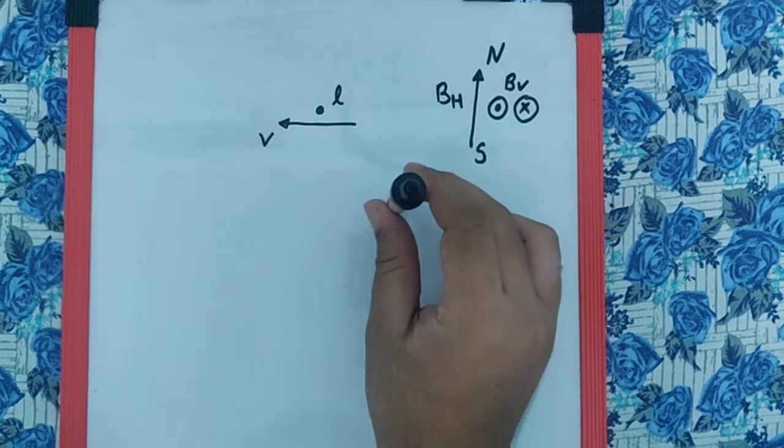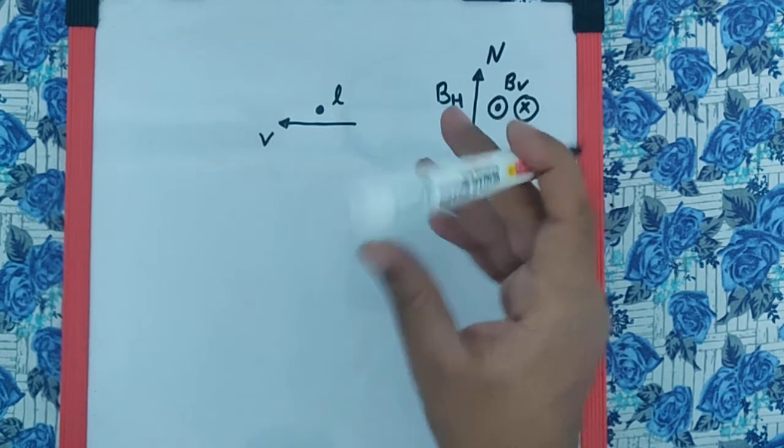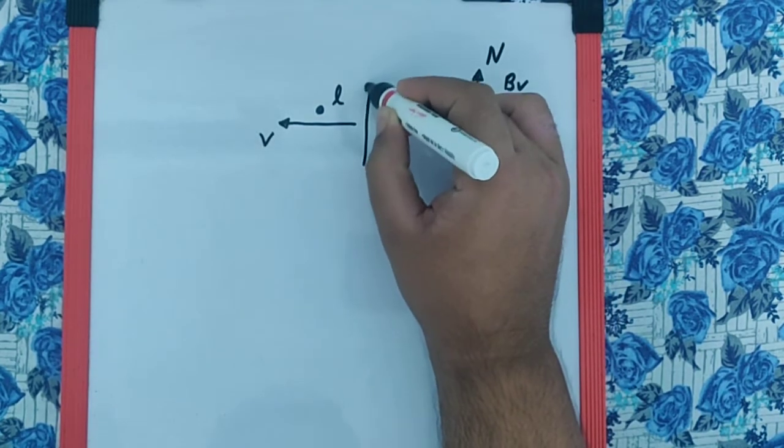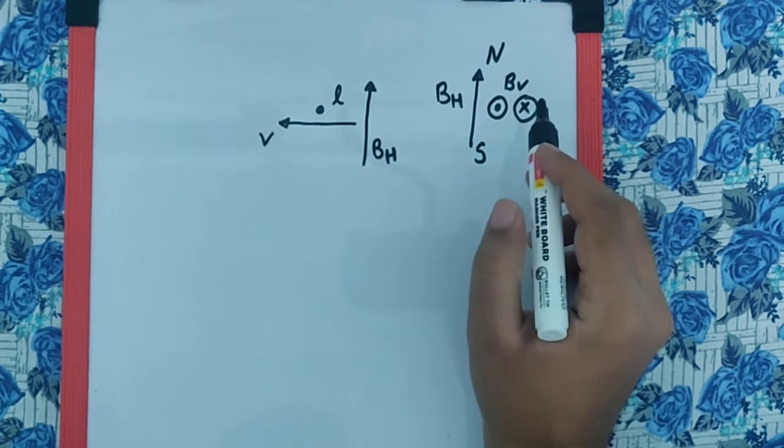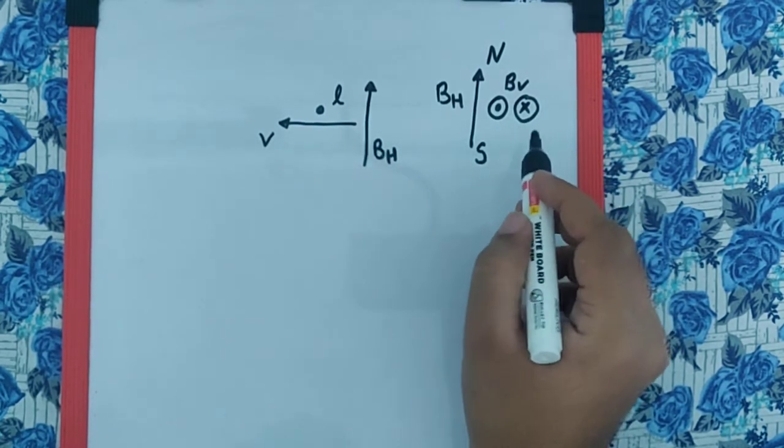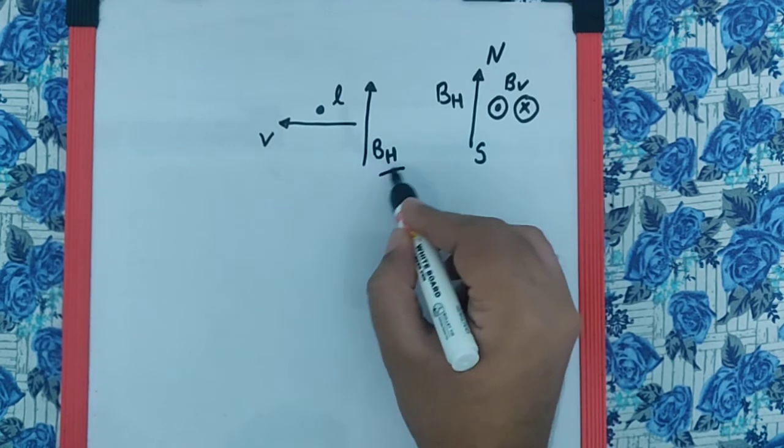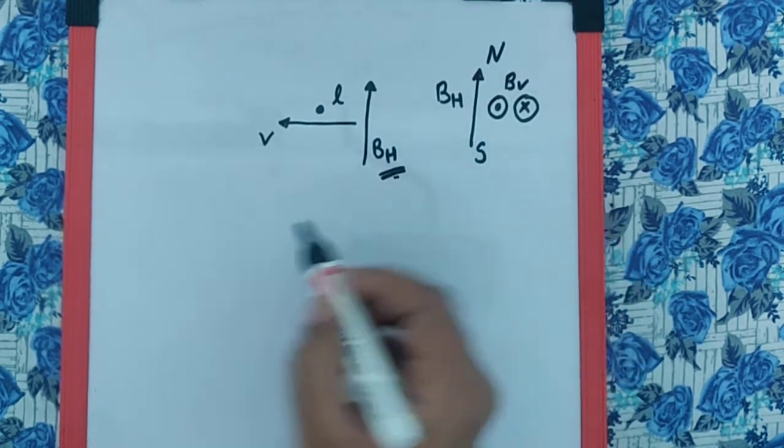So definitely when it comes to cutting the magnetic field, it can cut only the horizontal magnetic field and not the vertical magnetic field. So therefore the EMF which is induced is only because of the horizontal magnetic field.